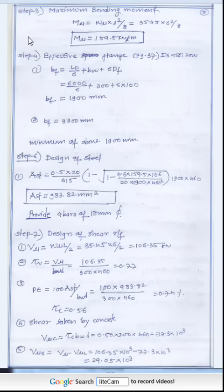Maximum bending moment is given by M equals to WL squared by 8. So you get this value. Then effective span - that means step number 4, effective width of flange. From IS code page 37 you get this relation. Put the value and you get the answer for BF.